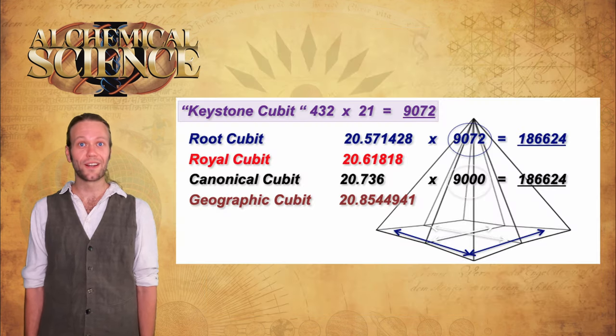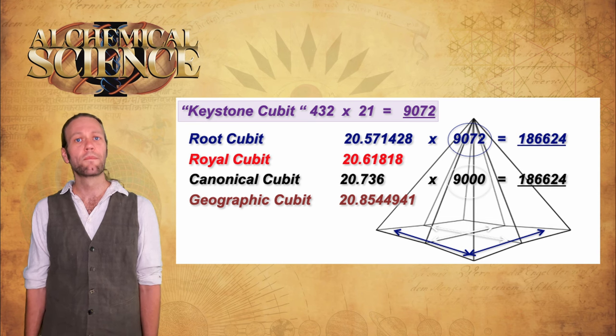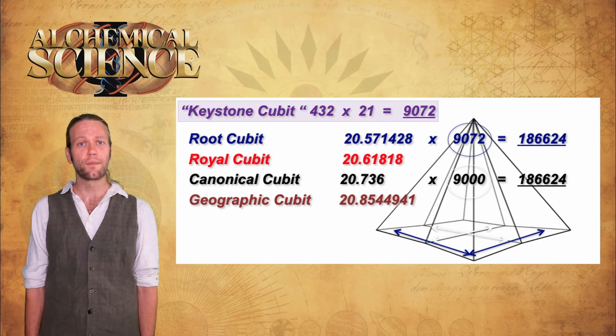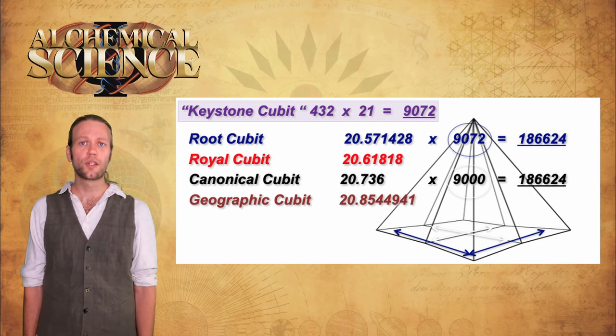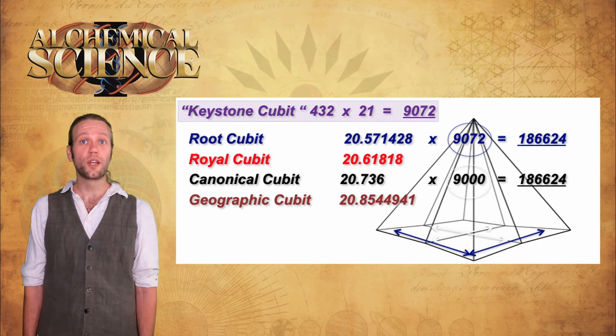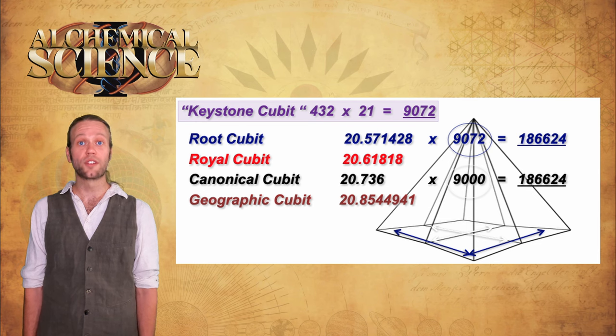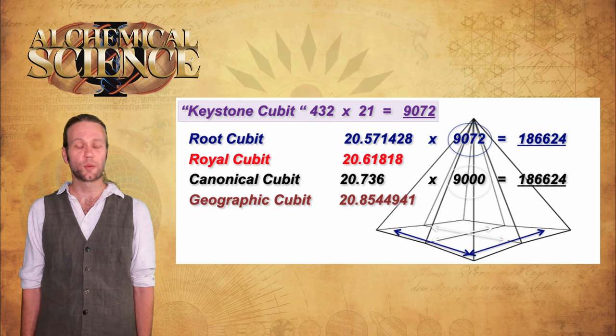Just as the builders of the pyramids use both inches and cubits simultaneously in the design and construction of Giza, they also use both the root cubit and the royal cubit simultaneously. In this case, the root cubit and the royal cubit were used as two different units to describe the same measurement from different perspectives for different reasons. The root cubit is, as its name suggests, the root or the base measurement derived directly from the template through the interaction of the harmonic numbers, as we've shown.